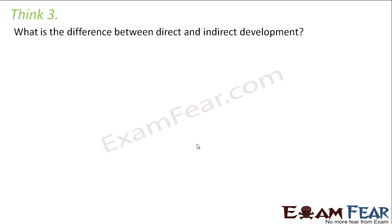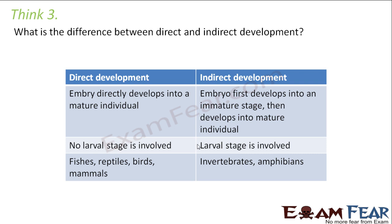What is the difference between direct and indirect development? In direct development, the embryo develops directly into a mature individual. This doesn't mean a child is born as a 20-year-old adult — when a baby is born, the baby is already a human being. There is no intermediate stage, no other organism formed first that then grows into a human being. That is an example of direct development.